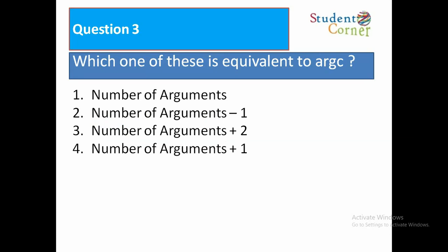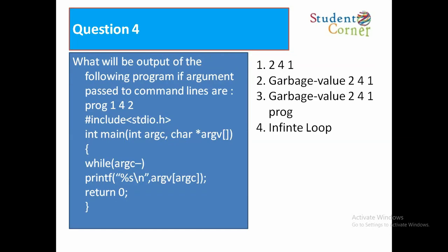Question 3: Which one of these is equivalent to argc? Option 1: Number of arguments. Option 2: Number of arguments minus 1. Option 3: Number of arguments plus 2. Option 4: Number of arguments plus 1. The answer is number of arguments plus 1.